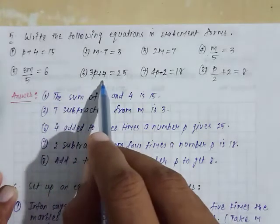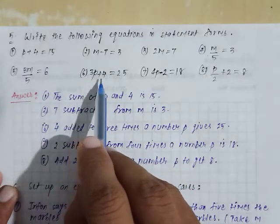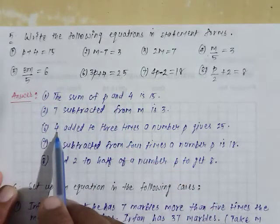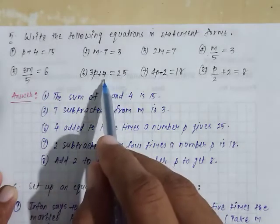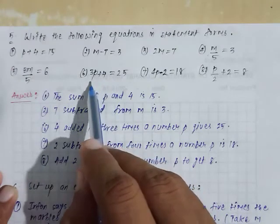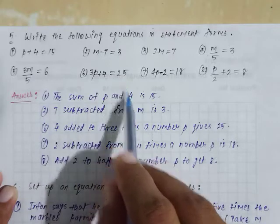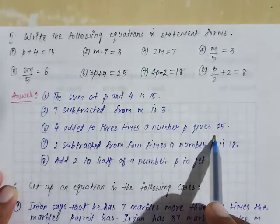Come to question number 6. 3 times p plus 4 is equal to 25. So we write: if 4 is added to 3 times a number p, it gives 25.